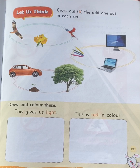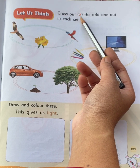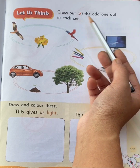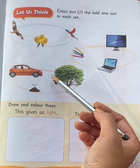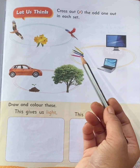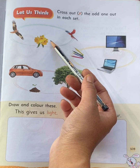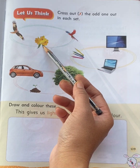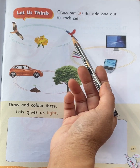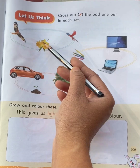Now come to page number 109. Let us think. Cross out the odd one out in each set. Here you can see three sets. In each set, you can see three objects. See the first set. Here you can see two birds and flowers. Which object is odd here? Flowers. Cross flowers.